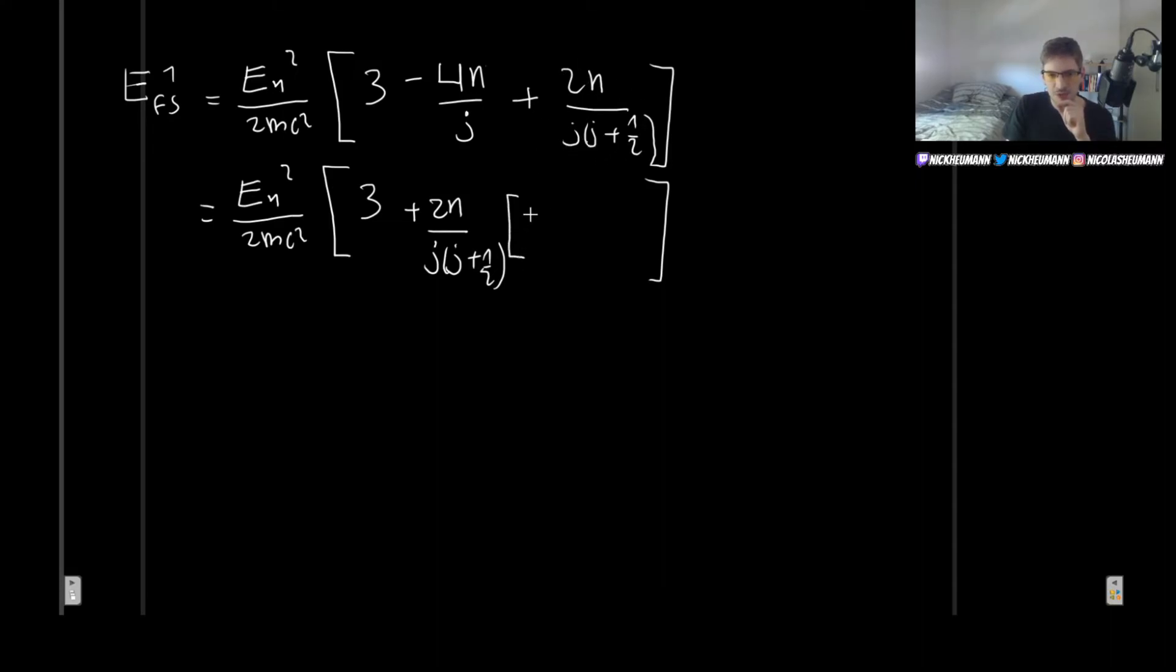Then we have minus 2 times J plus one-half. I need to multiply this by J plus one-half divided by J plus one-half so that I can factor it out like this. That's why there is this J plus one-half. If you're unsure, just multiply this through and you will see that the first term will be the same and the second one will, of course, be the same as well.